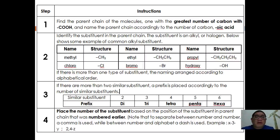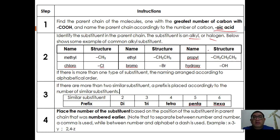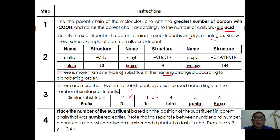Here are the step-by-step instructions for naming carboxylic acids. First, find the parent chain with the greatest number of carbons and name it ending with 'oic acid'. Second, identify the substituents such as alkyl groups or halogens. If there is more than one type of substituent, arrange names alphabetically. Third, if there are two or more similar substituents, use a prefix: di, tri, tetra, penta, or hexa. Finally, place the position number of each substituent in the parent chain.